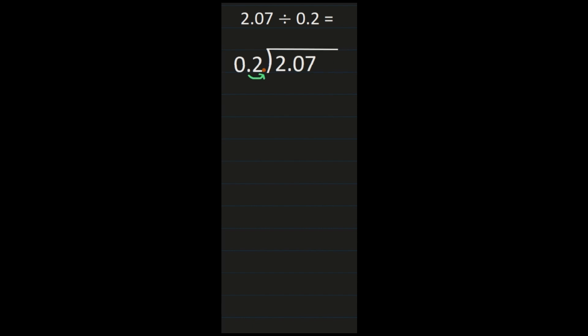If I move the decimal in the divisor, I also need to move it the same number of places in the dividend. So I'm going to move that decimal one place to the right in the dividend. I always recommend to my students to rewrite the problem so you can clearly see what you're working with. We now have 20 and 7 tenths divided by 2. Then we move that decimal point straight up so it's in the correct place in our quotient.